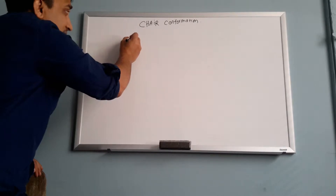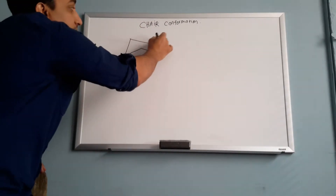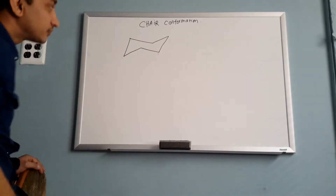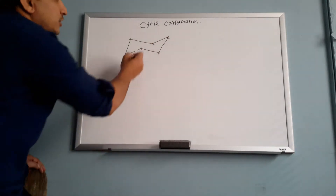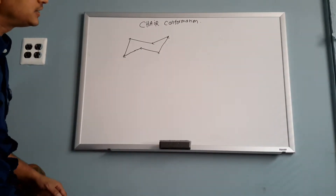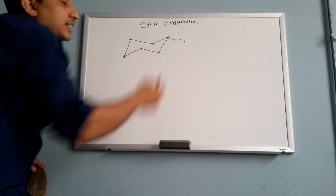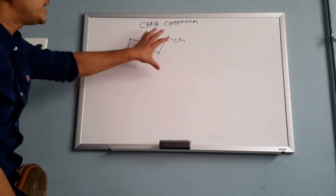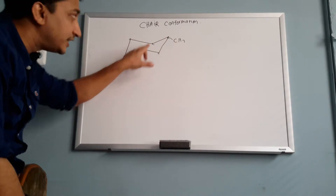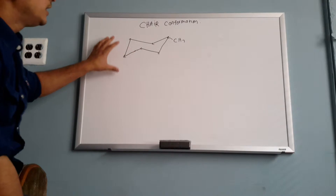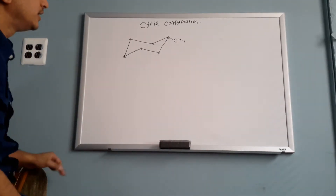Chair conformation is only for cyclic structures. Look at this — this is your chair. How many carbons are in there? One, two, three, four, five, six. So if it is five carbons, it's not possible; if it is seven, it's not possible. Only six carbons. But don't get confused — if you have a substituent like CH3, that means there is a seventh carbon, but that carbon is not inside the ring. I mean only the carbons that make up the cyclo ring. Six carbons make cyclohexane.